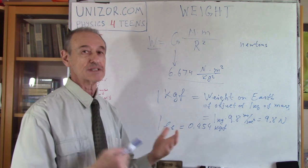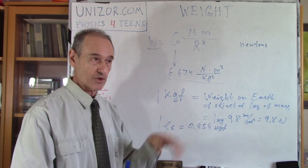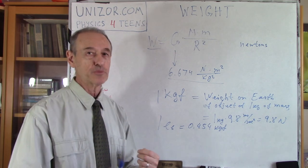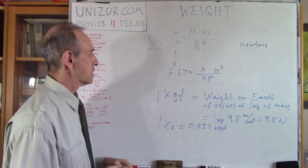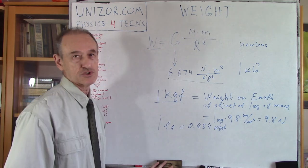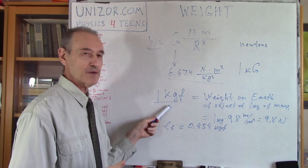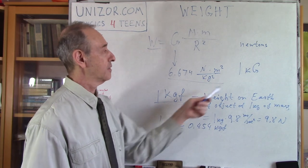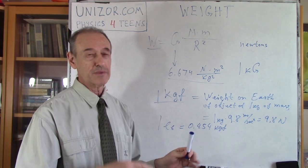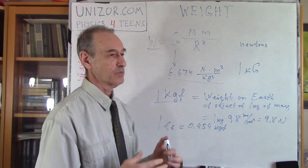To tell the truth, very rarely people use the kgf abbreviation. They just use kg, assuming that this is actually a kilogram of force — the gravity with which Earth, our planet Earth, attracts an object of a mass of 1 kilogram. Sometimes it's written with a capital G. So the everyday usage is just 'kilogram', assuming it means the weight of an object of a mass of 1 kilogram, which is kilogram of force.